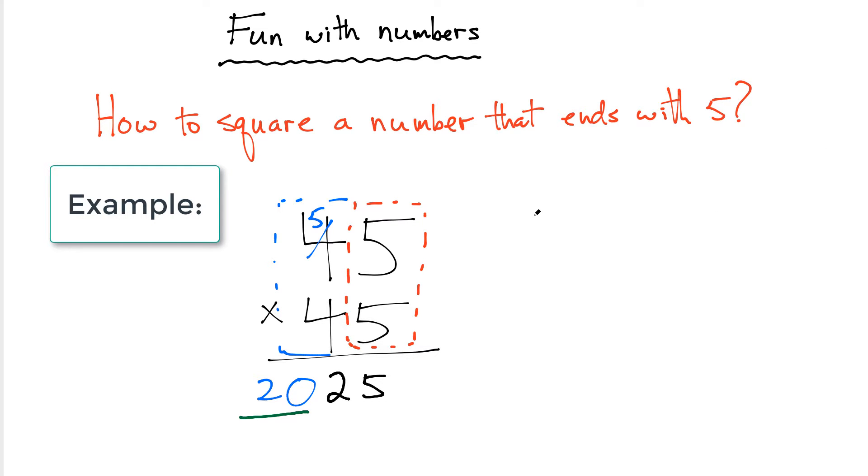Very simple. So try another one. What if we had 25 multiplied times 25? Again, we're always interested in squaring numbers that end with 5. So again, it always ends with 25.